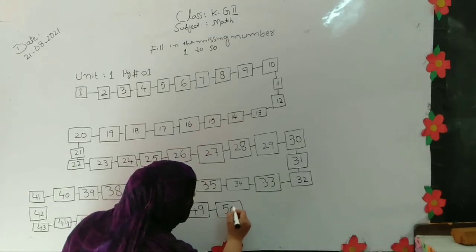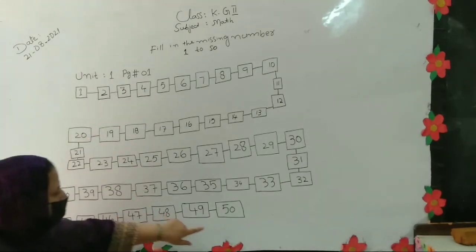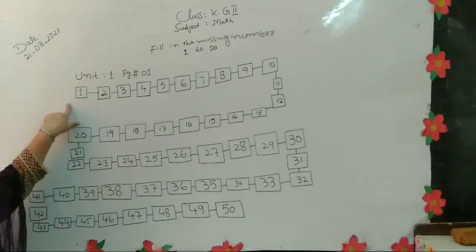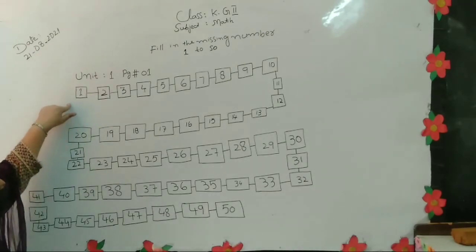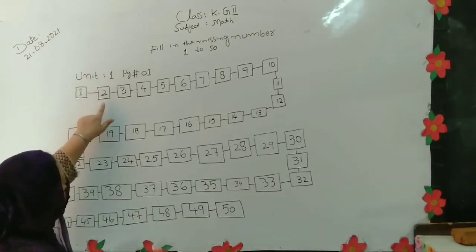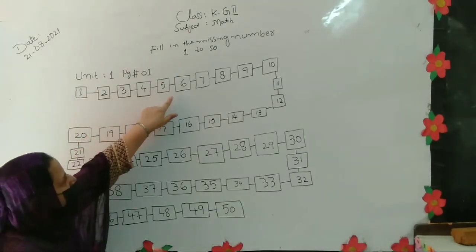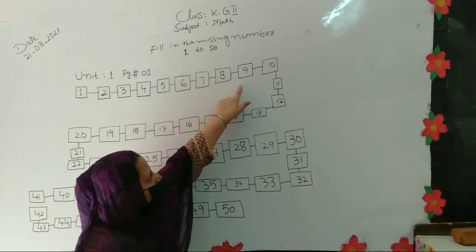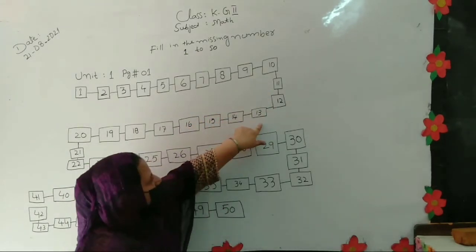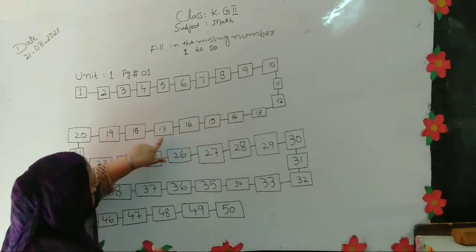We have completed the fill-in-the-missing-number exercise from 1 to 50. Now read it once. The more times you practice counting, the faster you will learn. Let us read together: 1, 2, 3, 4, 5, 6, 7, 8, 9, 10, 11, 12, 13, 14, 15, 16, 17, 18.